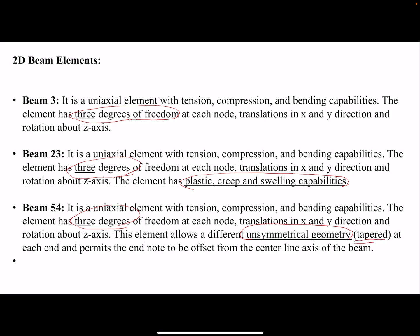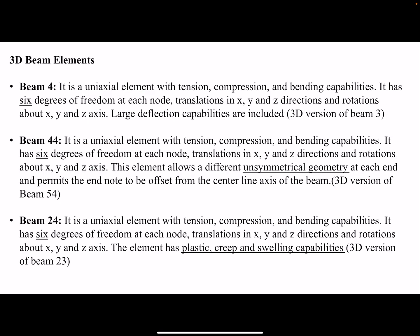If you have tapered geometry, for the case of 3D, Beam 4 is an equivalent of Beam 3 in 3D. You have six degrees of freedom at each node and in total six degrees of freedom per element. Beam 44 is an equivalent of Beam 54 in 2D.